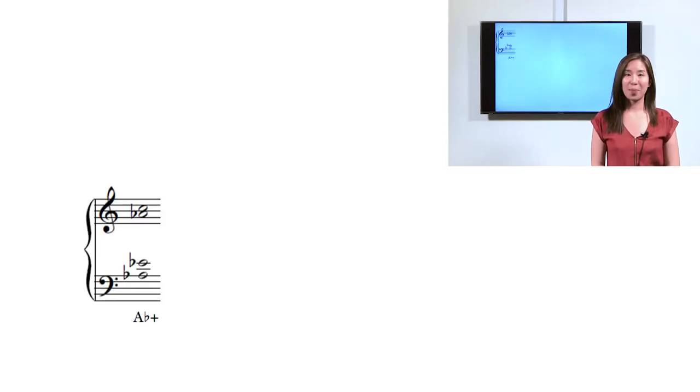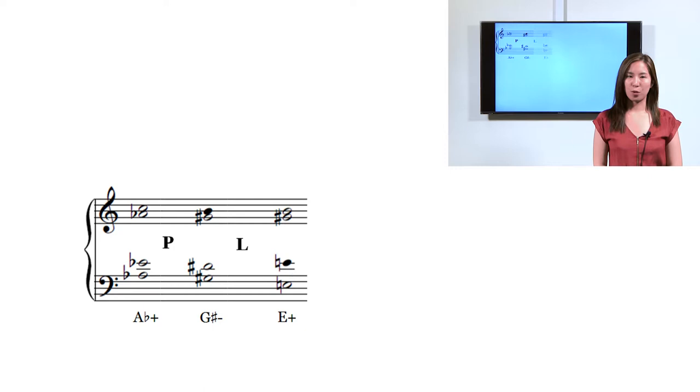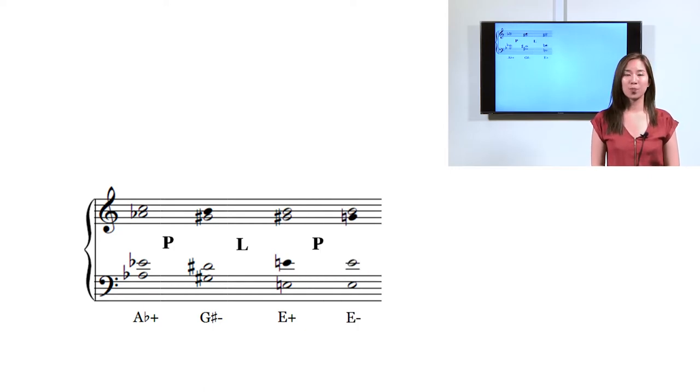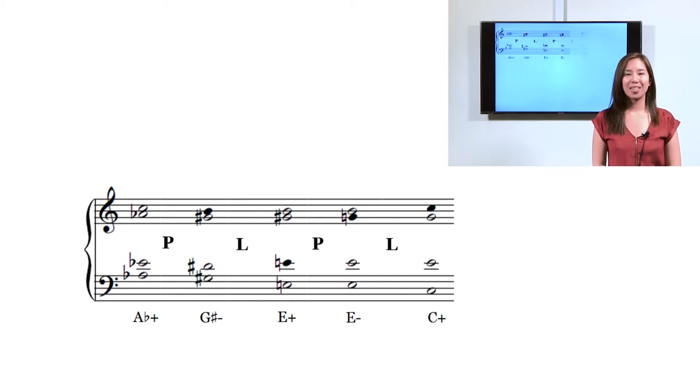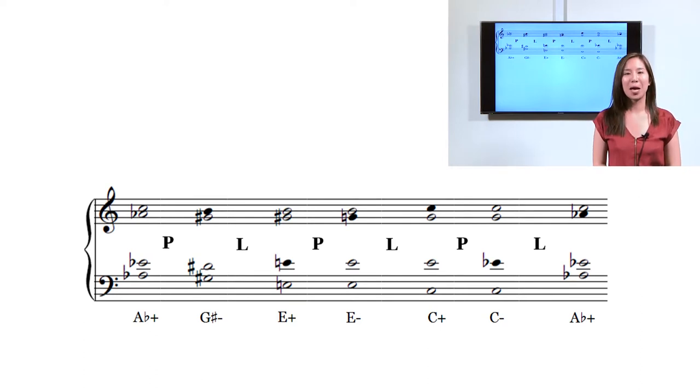Starting with A flat major, the music moves to G sharp minor through P, G sharp minor then moves to E major through L, E major moves to E minor through P, E minor moves to C major through L, C major moves to C minor through P, and finally C minor returns to A flat major through L.